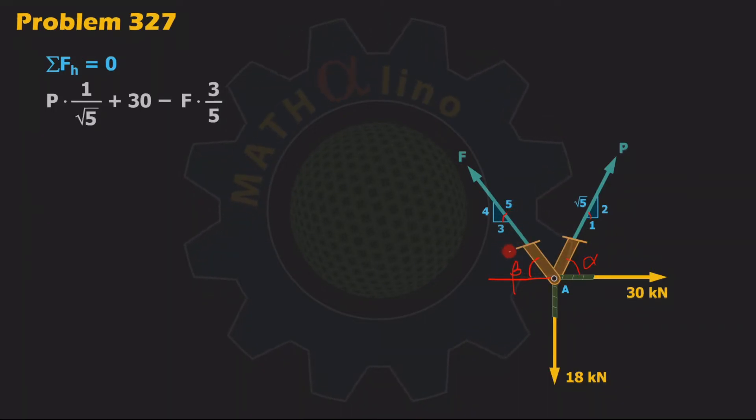Equal to no other force in the horizontal direction, so we are going to equate this to 0. Rearrange: we have 1 over square root of 5 times P minus 3 fifth of F. Transpose this positive 30 to the right side of the equation, that will become negative 30, and this will serve as our equation number 1.